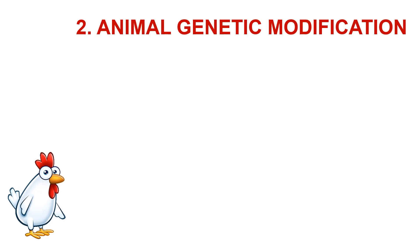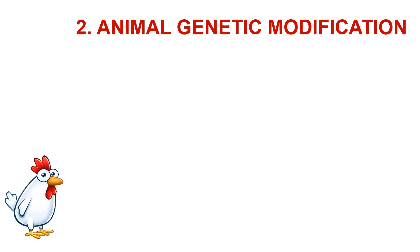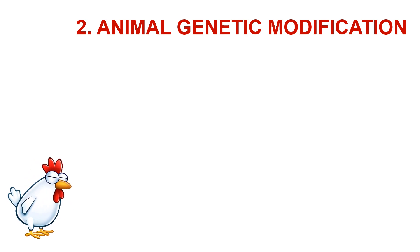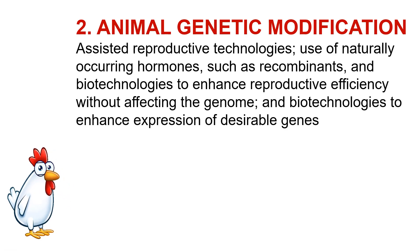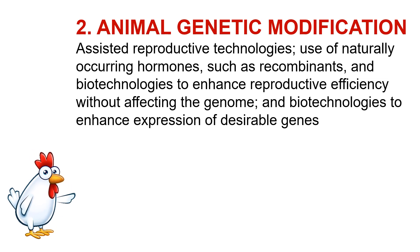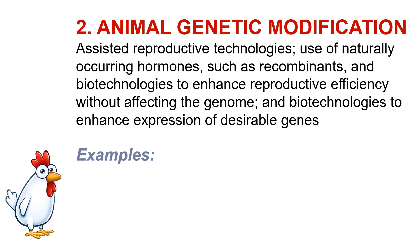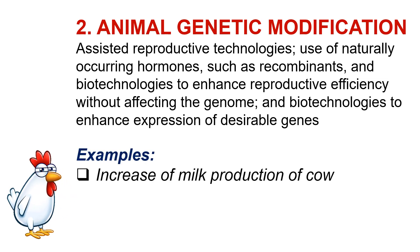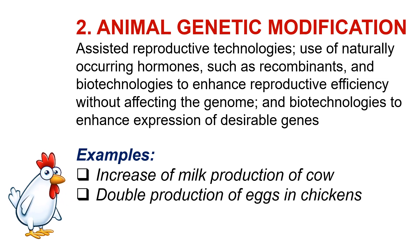The second type is animal genetic modification. Modern breeds of livestock differ dramatically from their ancestors as a result of breeding strategies. Established and emerging biotechnology in animal agriculture include assisted reproductive technologies, use of naturally occurring hormones such as recombinants and biotechnologies to enhance reproductive efficiency without affecting the genome, and biotechnologies to enhance expression of desirable genes. Examples include increase of milk production per cow and double production of eggs in chickens.